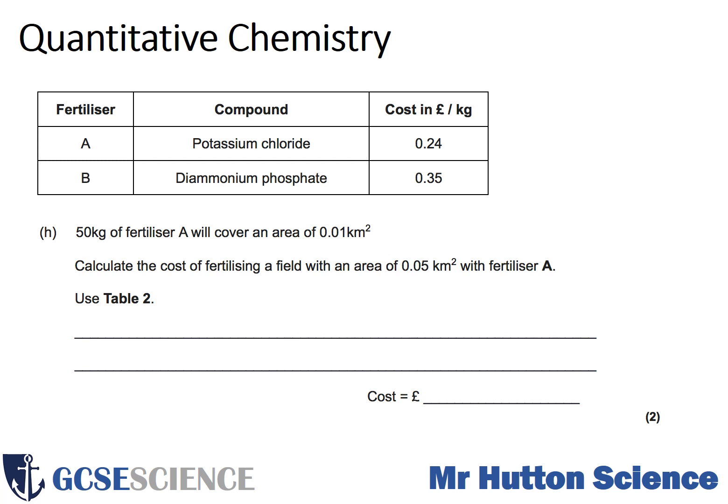In this example we've got a question put into context, looking at fertilizers. It states that 50 kilograms of fertilizer A will cover an area of 0.01 kilometers squared. It then asks you to calculate the cost of fertilizing a field with an area of 0.05 kilometers squared with fertilizer A. You have to notice that the cost in the table is per kilogram.